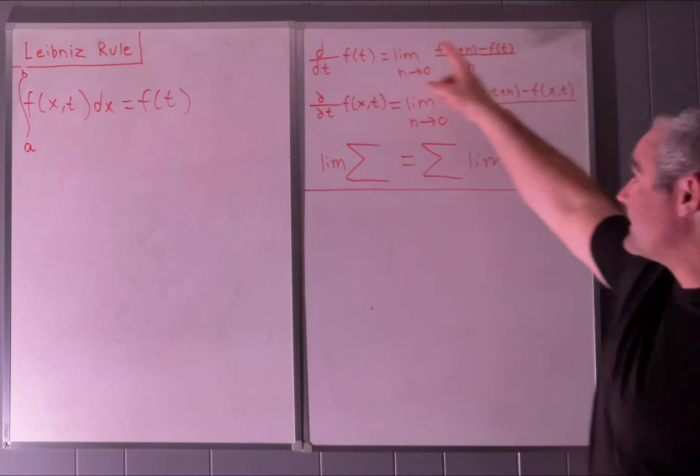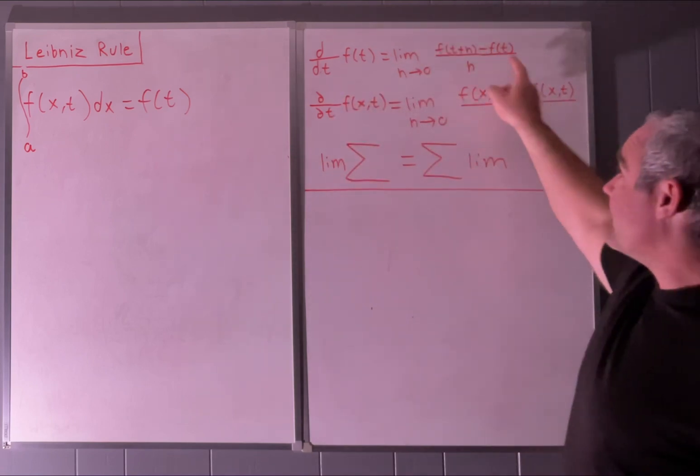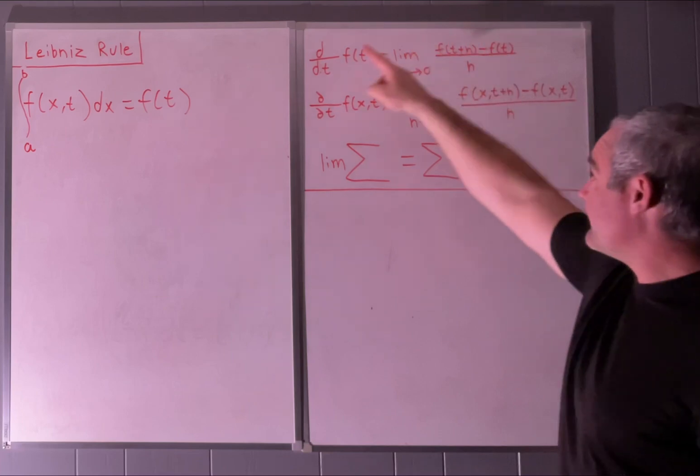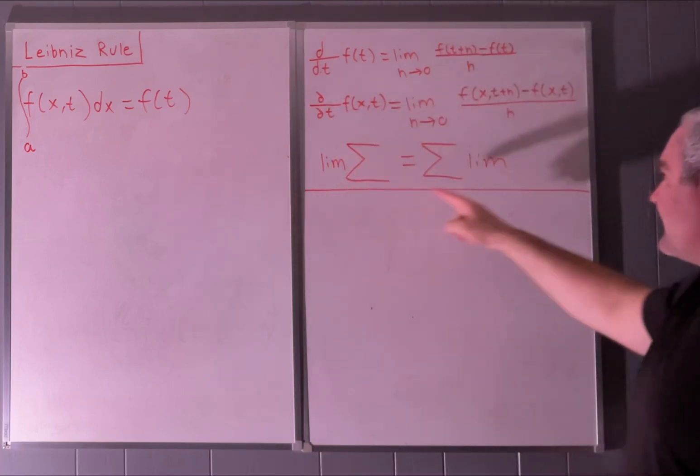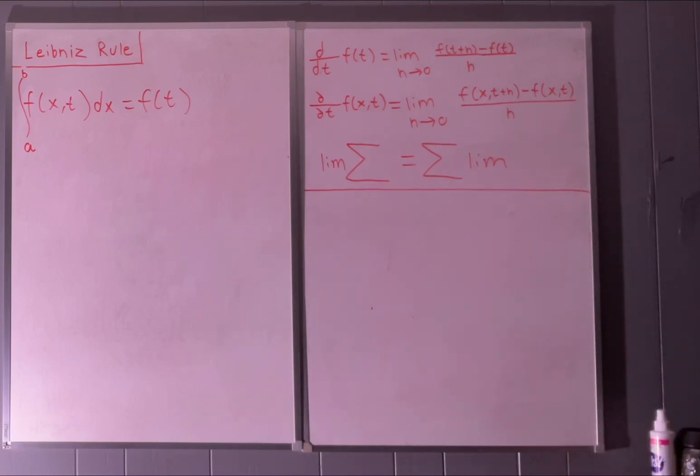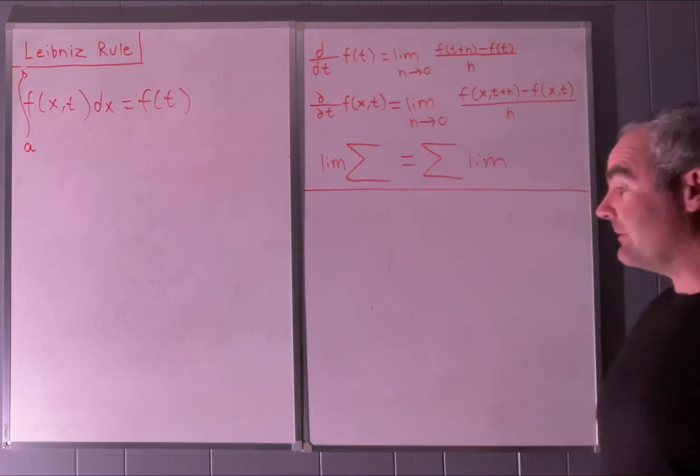We're going to be using three tools: the limit definition of a derivative, the limit definition of a partial derivative, and this little thing right here which I wrote this way. It just says that the limit of a sum is equal to the sum of the limits.